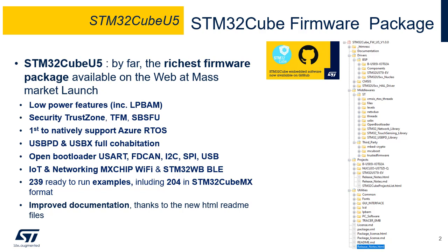It is open for pull requests and issues to facilitate user contributions and direct feedback. It highlights all features of the STM32U5 product with a particular focus on low-power features through dedicated examples and the first-of-its-kind provision of a helper utility driver for the LP-BAM subsystem. Security features are represented by TrustZone support, TFM stack integration, and dedicated SBSFU applications. This firmware package is the first to natively support Microsoft Azure RTOS middleware: USB-X, FileX, LevelX, ThreadX, and NetX Duo, including the full cohabitation of USB-X and USB-PD.